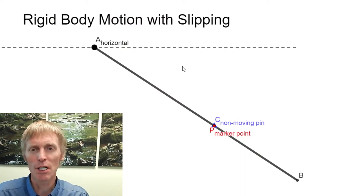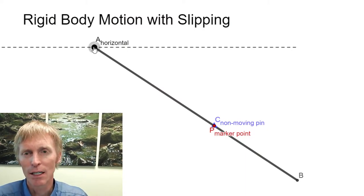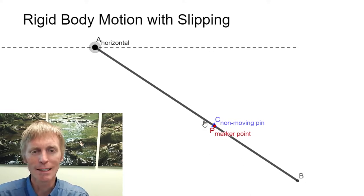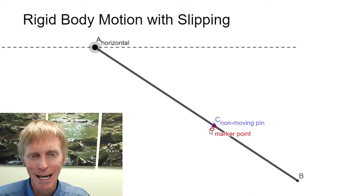So here is that same situation in an interactive. Here we can move this horizontally. Now notice this marker point. C and P are currently in this exact same location.